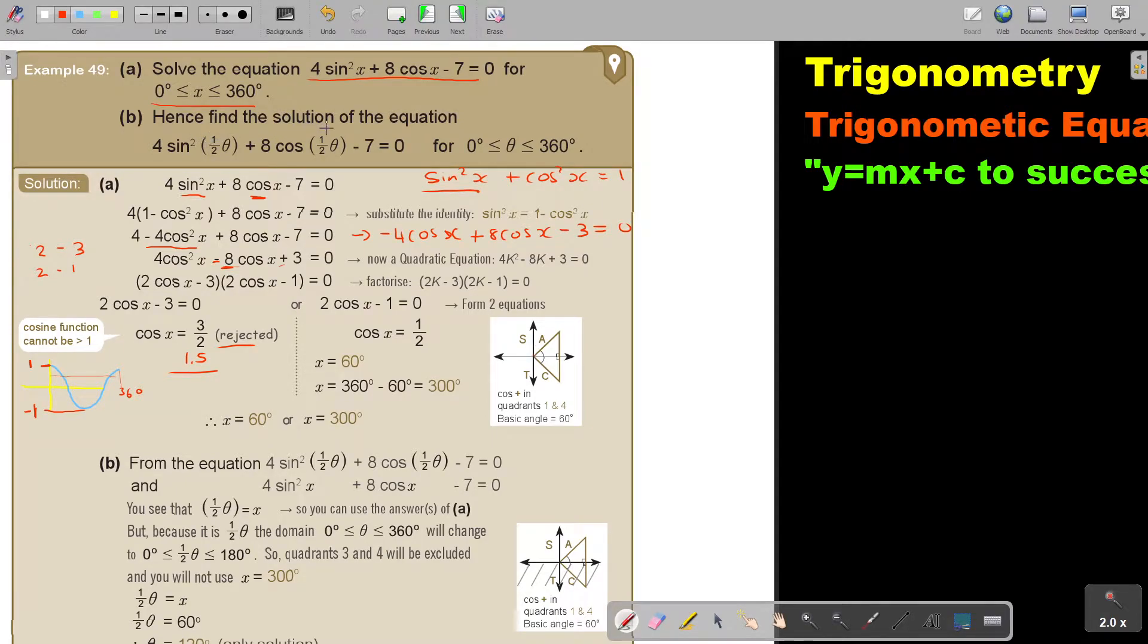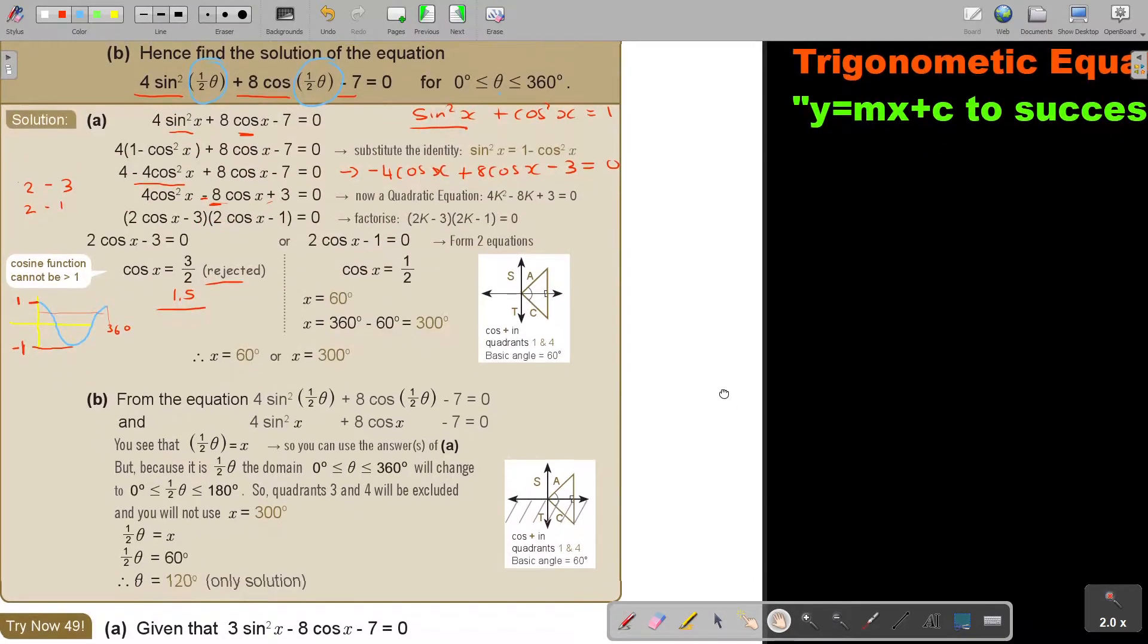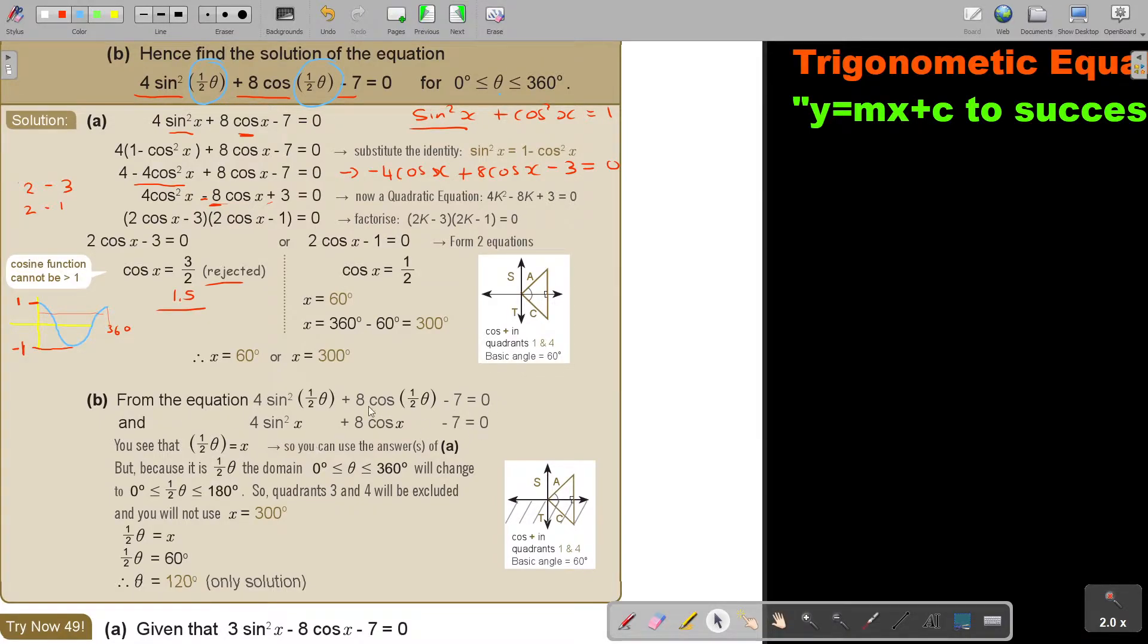Let's find the solution of the equation. I want you to compare these two. Compare this 4 sin squared, 8 cos x, negative 7. So the difference is just there. Do you see? In place of x, it's a half theta. But remember, if that's a half theta, this must also become a half. Let's first see what I explained. We will now come to all the details. From the equation, you can see that these are similar. The only difference is the x - in the place of the x is a half theta. You see that the half theta is x, so you can use the answers of a. But because a half theta, the domain is this, we must change it.